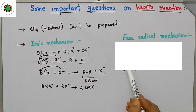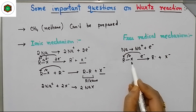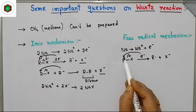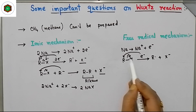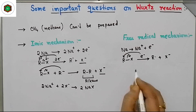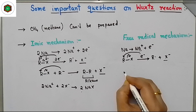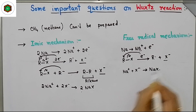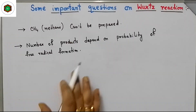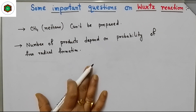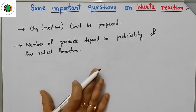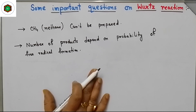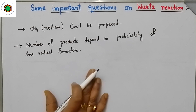For the free radical mechanism: this bond cleaves so that the halogen — being more electronegative — takes the electron, giving R dot (free radical) and X⁻. Na⁺ and X⁻ combine to form NaX. Remember, the number of products depends on the probability of free radical formation. Two different alkyl halides give all possible alkanes, but separation of the mixture is not easy because their boiling points are very close to each other.